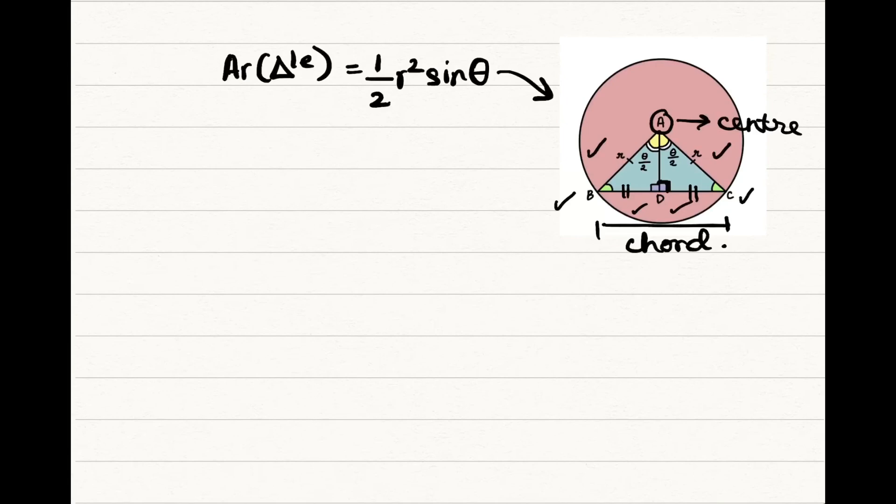From these three things which we just now got and from the SAS congruency criterion, we can say triangle ABD is congruent to triangle ACD.